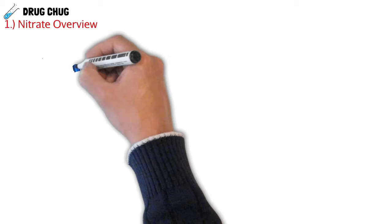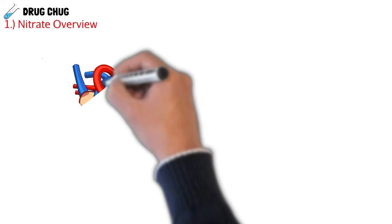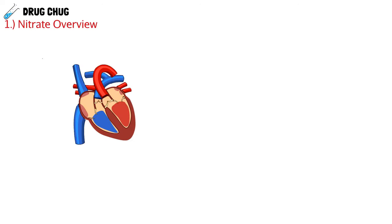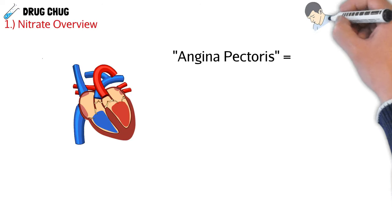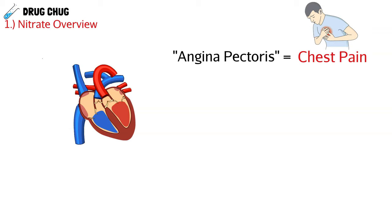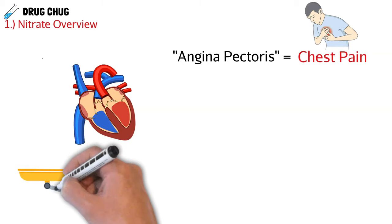To understand how nitrates work we need a quick overview, and to do that we need to look at the heart. The first thing we need to know is something called angina pectoris, which literally means chest pain. Here we can see a patient holding their heart and having that chest pain, which is actually caused by the heart.